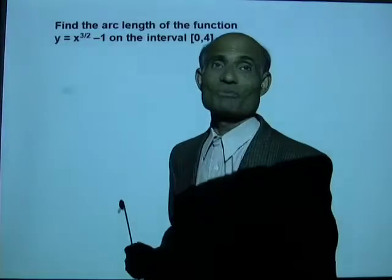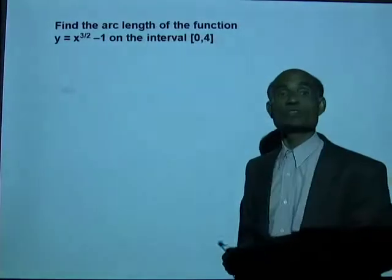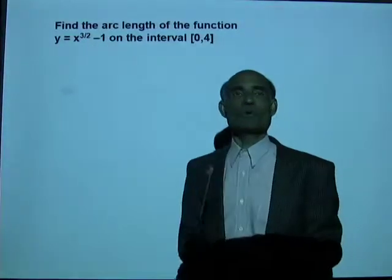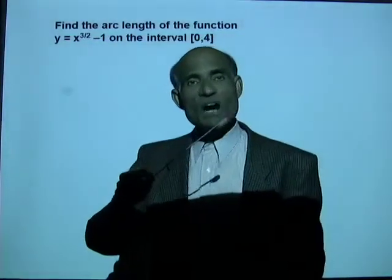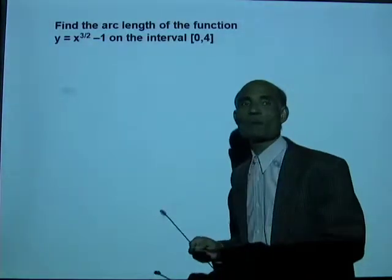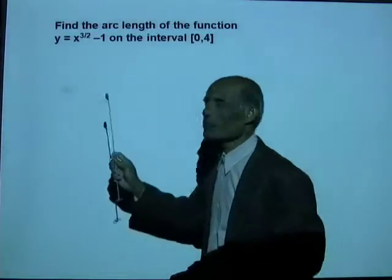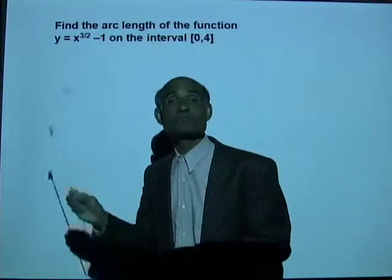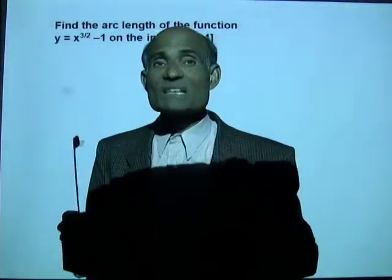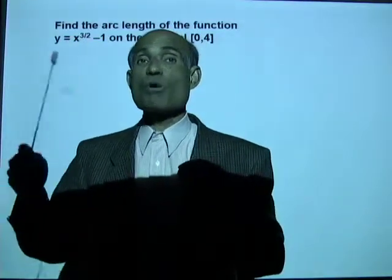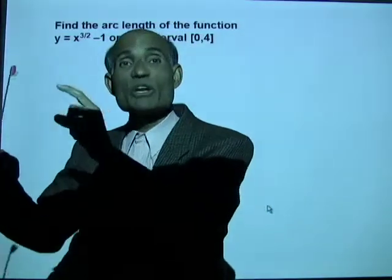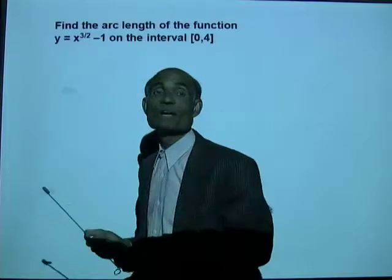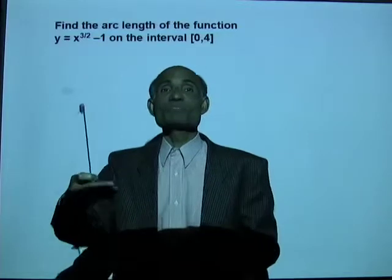Let's do a small problem. Find the arc length of the function y = x^(3/2) − 1 on the interval [0, 4]. We don't really need to draw the graph. Using our equation, s = ∫[a to b] √(1 + (dy/dx)²) dx, we need to start by finding dy/dx.